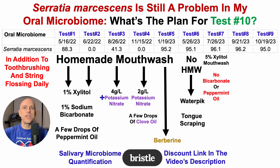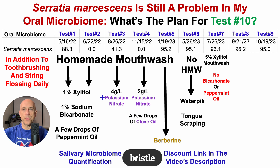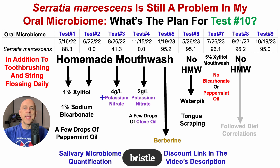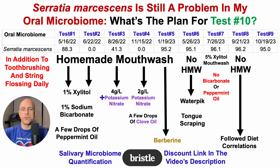For test number seven, I used a version of the homemade mouthwash but this time with 5% xylitol, as there's a published in vitro study showing that high concentrations of xylitol — especially 5% or higher — can reduce Serratia levels by about 80%. But there was no bicarbonate or peppermint oil in that mouthwash, used three to five times per day. That didn't impact Serratia either — it was at 96%. For test number eight, no homemade mouthwash, just dietary correlations, which we saw didn't work. For test number nine, the cardamom diet experiment, which also didn't work.